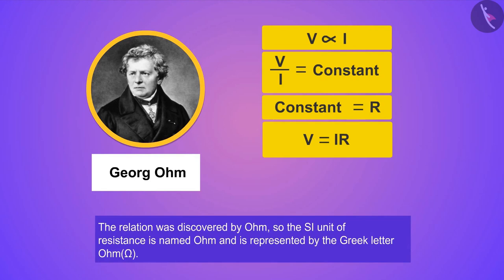If the potential difference across the two ends of a conductor is 1 volt and the current through it is 1 Ampere, then the resistance R of the conductor is 1 Ohm. That is, 1 Ohm equals 1 Volt upon 1 Ampere.